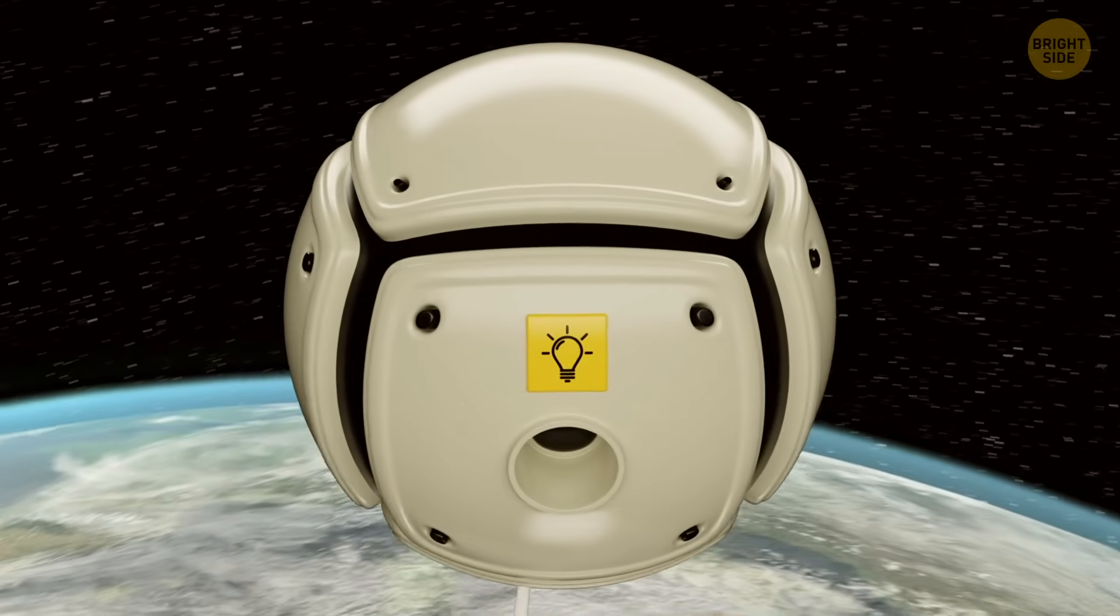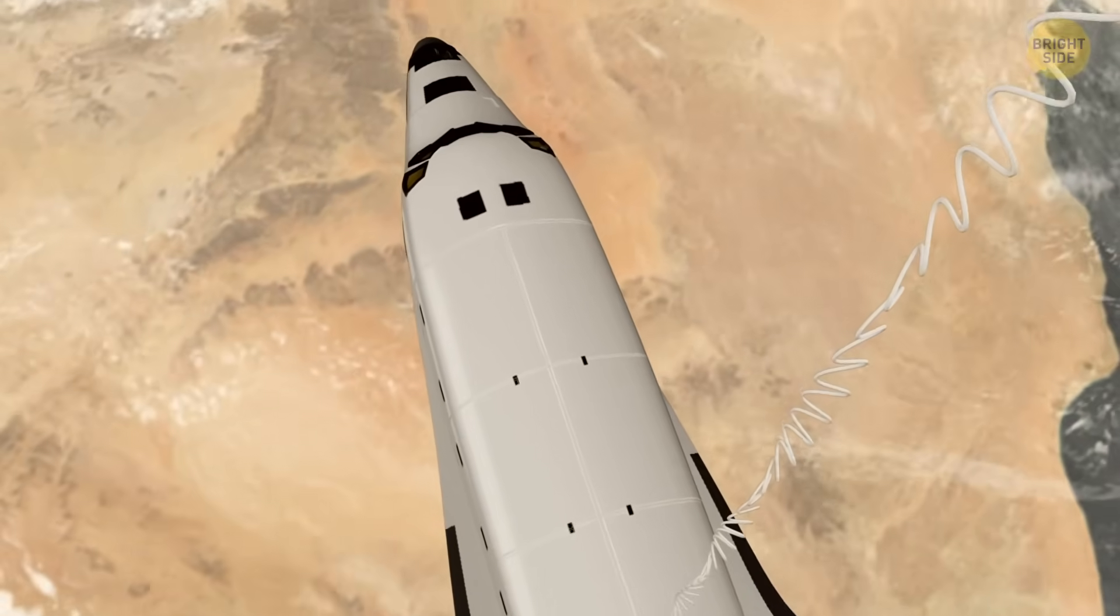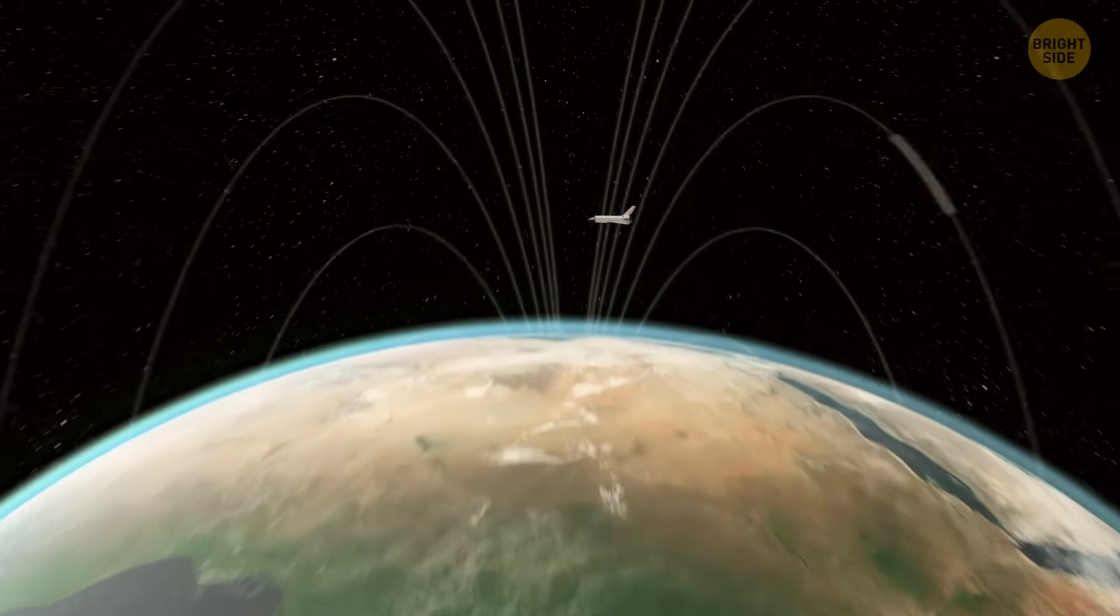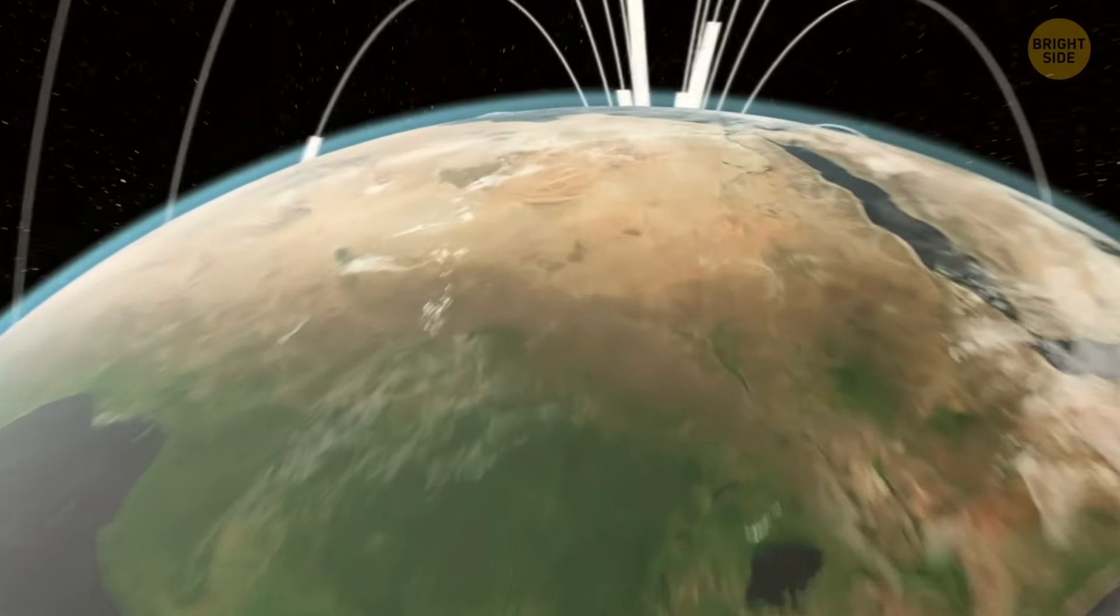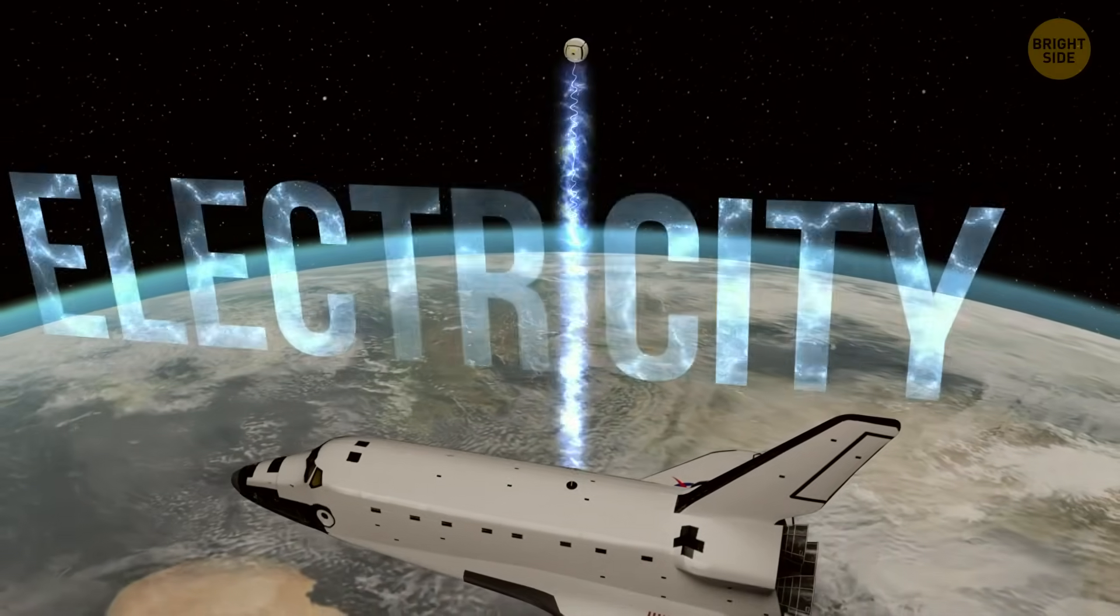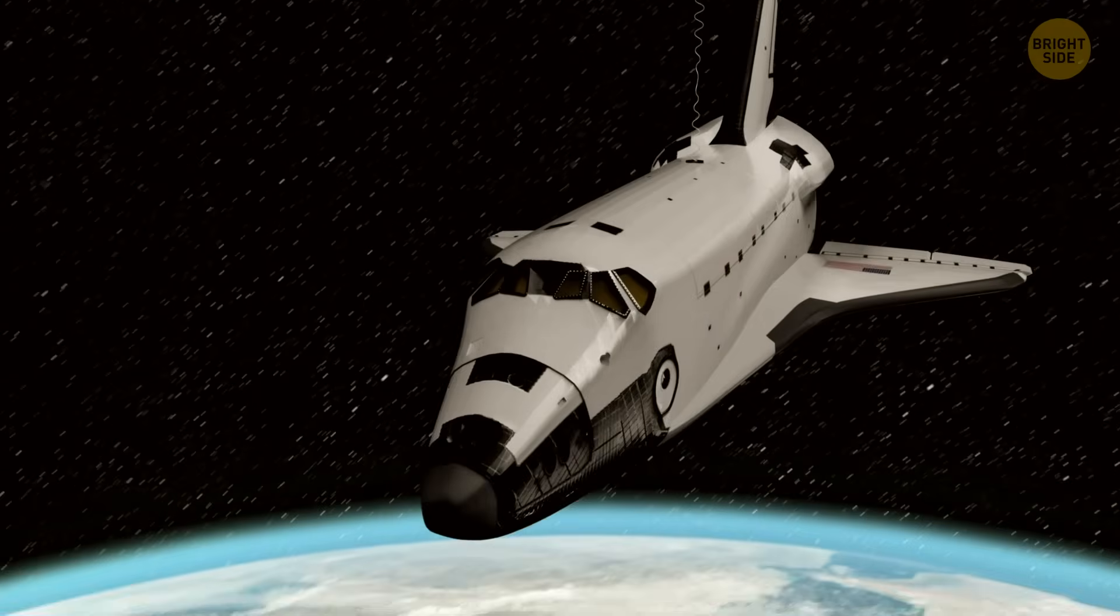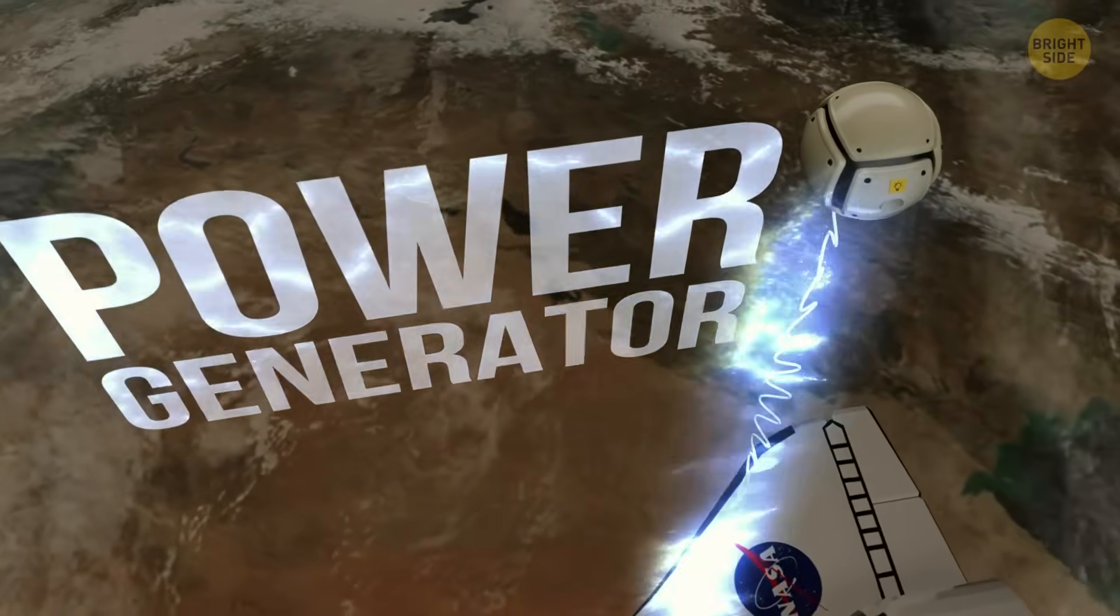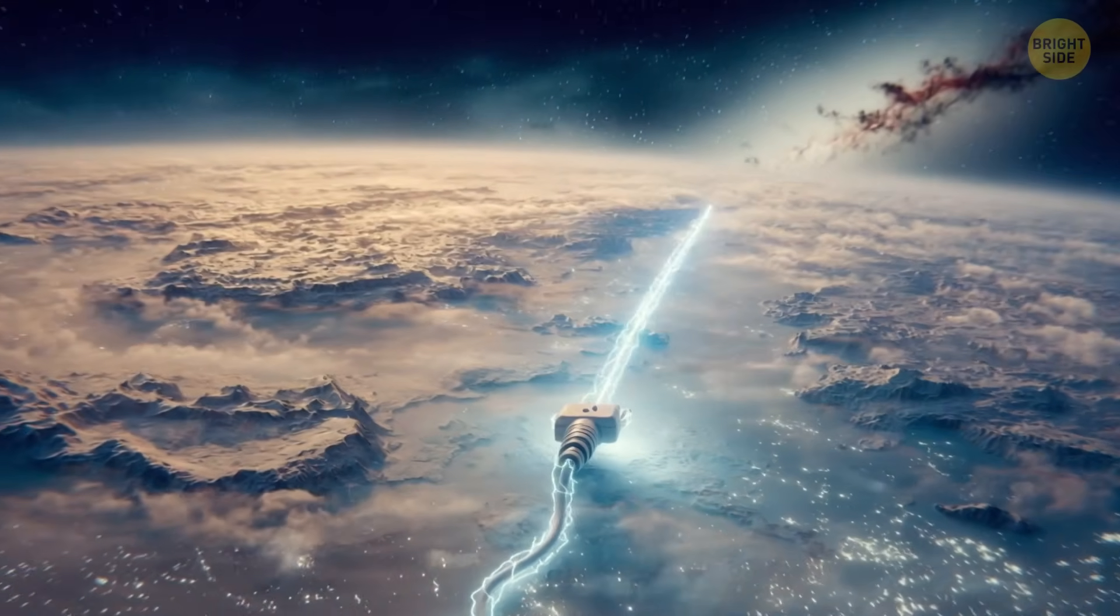They came up with a plan to reel a satellite from the Space Shuttle Columbia on a tether that could carry an electric current. As the shuttle zipped around Earth, that long cable would slice through the planet's magnetic field lines. In physics terms, moving a conductor through a magnetic field generates electricity. So the Space Shuttle tether satellite combo was about to turn into a giant orbital power generator. It was like plugging an extension cord into Earth's invisible magnetism.